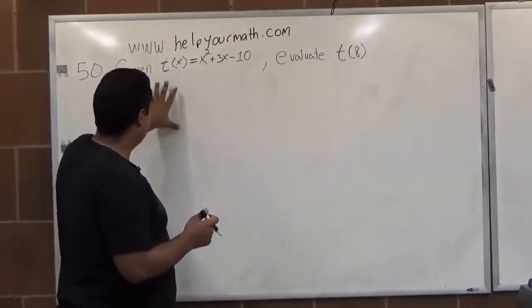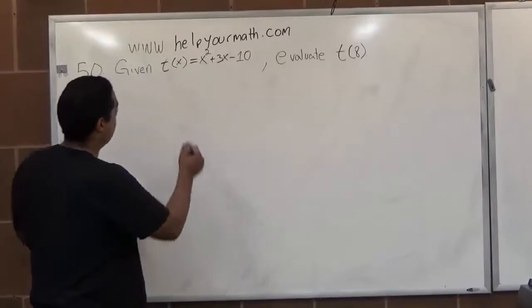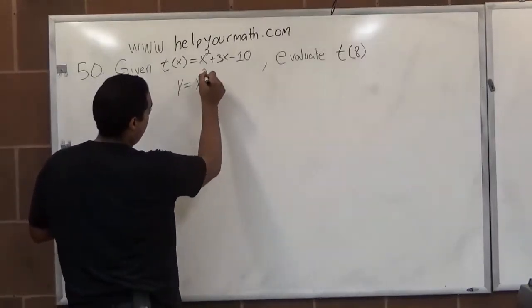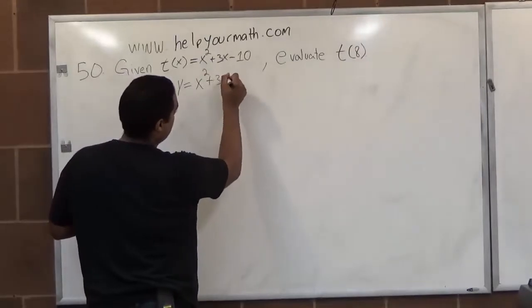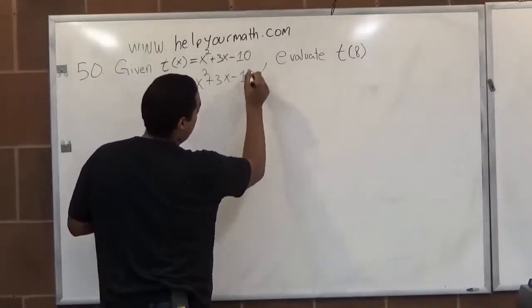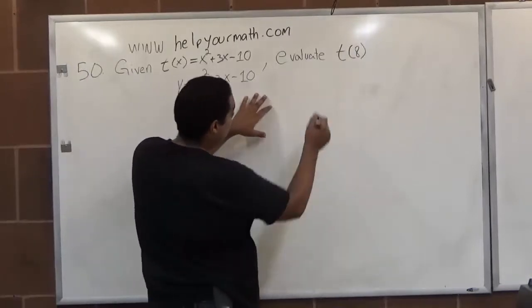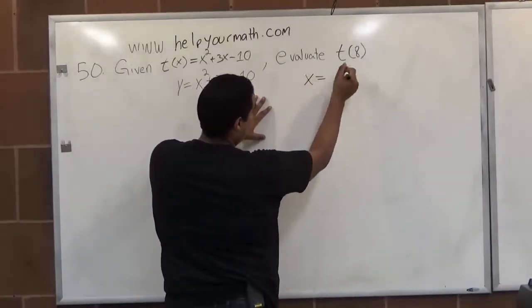The easiest way to go about this is to reword this as y equals 2x squared plus 3x minus 10, and you're looking for y when x is equal to 8.